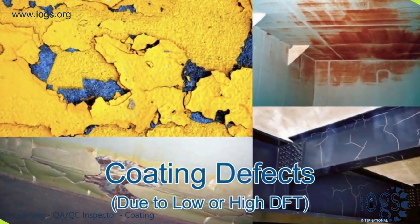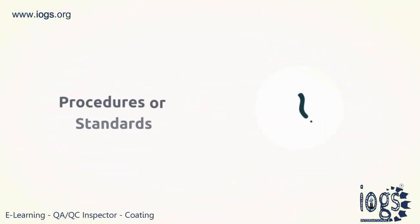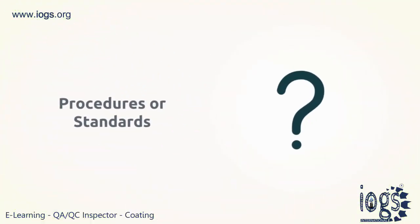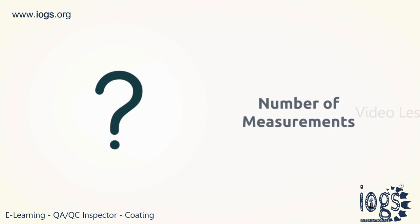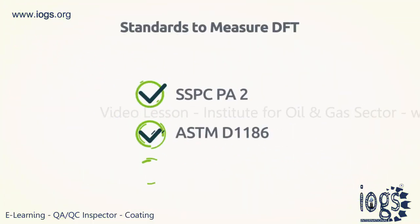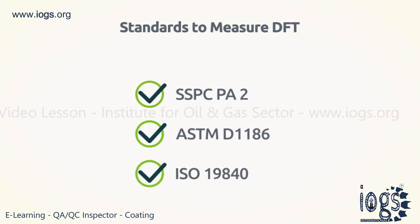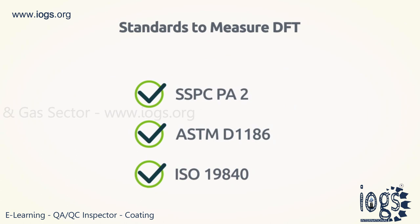Without knowledge of the updated industry procedures or standards, coating inspectors will be unable to carry out a proper DFT measurement for the number of measurements to be taken to achieve an adequate inspection. To achieve an adequate DFT measurement, three key standards must be followed: the SSPC-PA2, the ASTM-D1186, and the ISO-19840.